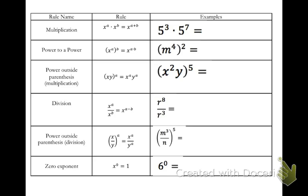Pause your video and copy down each row as we go through them. Our first rule is multiplication: x to the a times x to the b equals x to the a plus b. Anytime we have common bases, we just take the exponents and add them. In this example, 5 to the third times 5 to the seventh — the base is the same, so we rewrite the base and add the exponents: 3 plus 7 gives us 5 to the tenth.